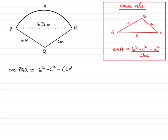All divided by twice the product of the two sides that surround the angle, which is 2 times 6 times 6.